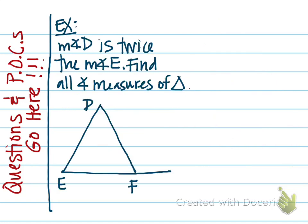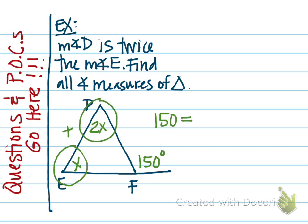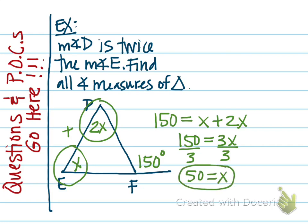Here is our last example for this section. We have this picture, and we're told that the measure of angle D is twice the measure of angle E, and we need to find all the angle measures of the triangle. This exterior angle is 150 degrees. If we let the measure of angle E equal X, then the measure of angle D equals 2X. The 150-degree exterior angle equals the sum of the two remote interior angles, so X plus 2X equals 150. Simplifying: 150 equals 3X, divide both sides by 3, so X equals 50.